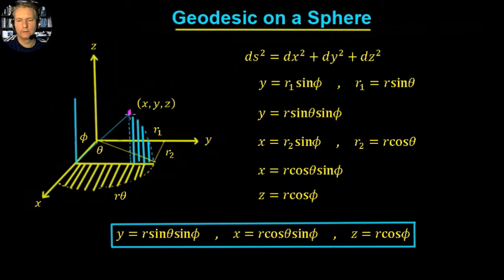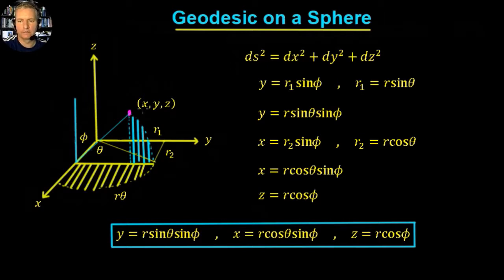The angle that we're interested in is not actually the angle up in this direction. We actually define the angle phi as the angle from here down — so we're thinking about coming from this point and walking down to get to that point. That gives us our angle phi, which sits in this blue plane, the z,y plane. So we've got three things we're interested in: the radius, the angle theta, and the angle phi.